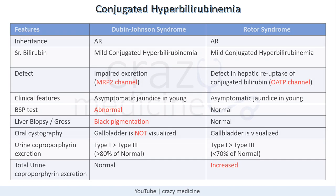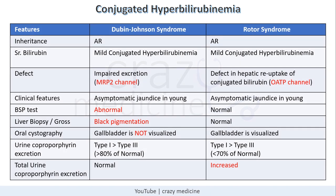This table differentiates conjugated congenital hyperbilirubinemia. In Dubin-Johnson syndrome there is a defect in the MRP2 channel, whereas in Rotor syndrome there is a defect in the OATP channel. Important diagnostic tests for Dubin-Johnson syndrome — BSP test, liver biopsy, and oral cholecystography — are normal in Rotor syndrome. Total urine coproporphyrin excretion remains normal in Dubin-Johnson syndrome but is increased in Rotor syndrome.